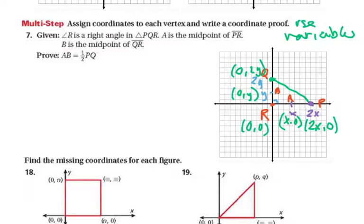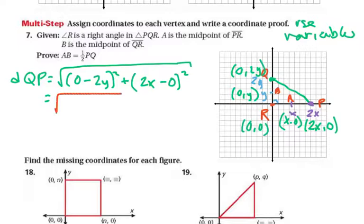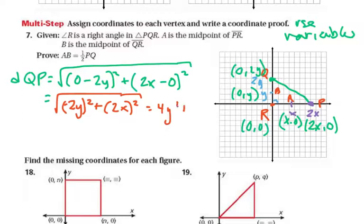Now we calculate the distance QP using the distance formula. QP = √[(0 − 2Y)² + (2X − 0)²] = √[(−2Y)² + (2X)²] = √[4Y² + 4X²]. So the distance QP is the square root of 4Y² + 4X².